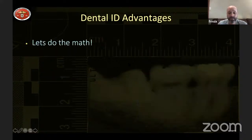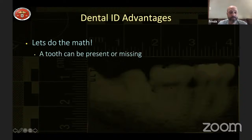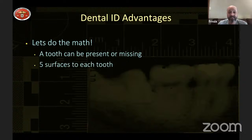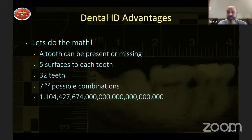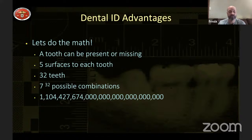If we crunch the numbers — a tooth can be present or missing, with five surfaces to each tooth and 32 teeth — that means there are 7 to the 32nd possible combinations. That's an enormous number. Looking at that overall against the human population, what we can see in teeth is going to be pretty unique.